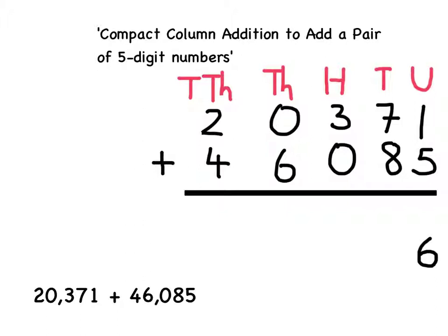Next I'm going to add up the tens. 70 add 80. This makes 150. To fit this in my compact columns I'm going to need to partition 150 into the hundreds and the tens. So in 150 there is 100 and 50.